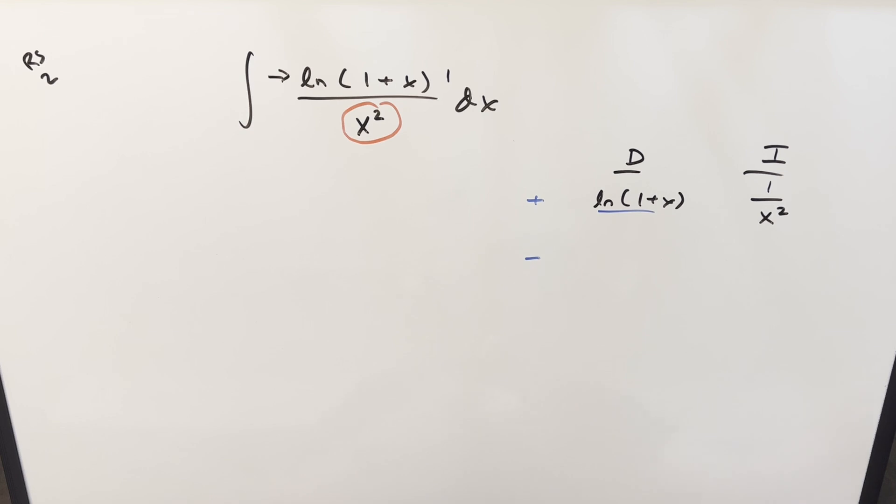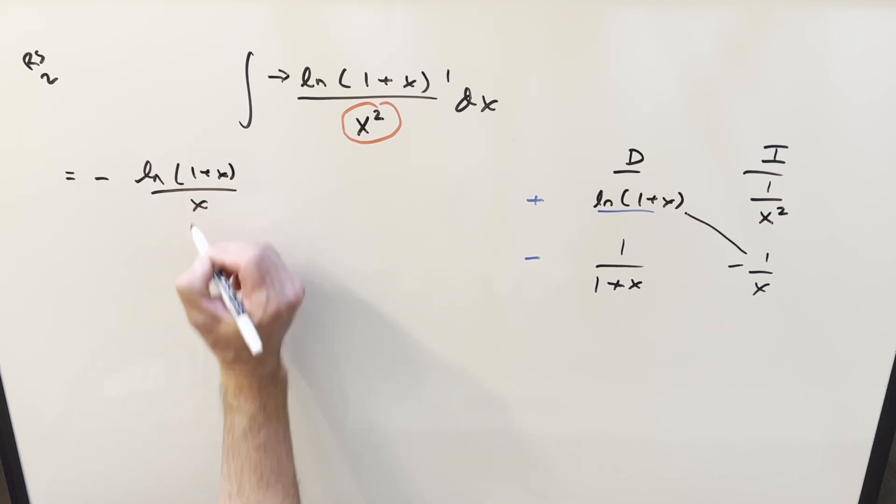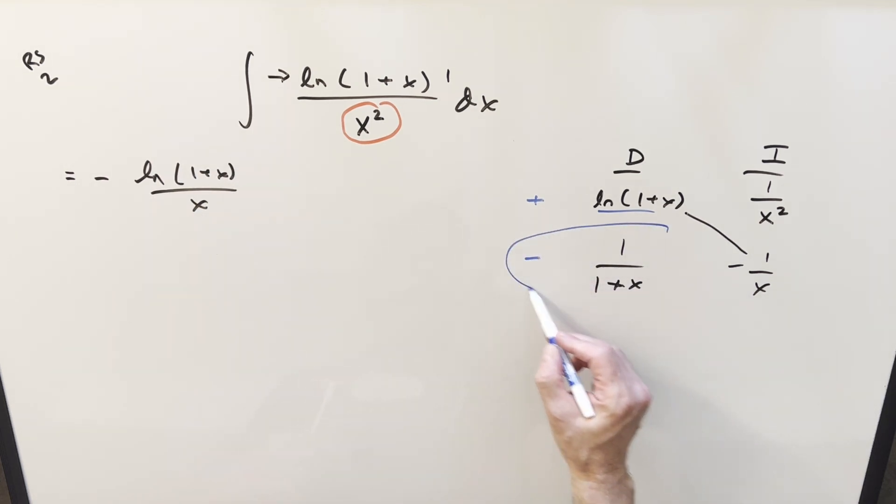Let's differentiate ln one plus x, that's just going to be one over one plus x. No chain rule because the derivative of this is just going to be one. Here the integral of one over x squared is going to be just minus one over x. So we have part of the solution here on the diagonal, let's copy that down, we'll write that as minus ln one plus x over x. And then all this stuff here we can multiply together, create that as an integral.